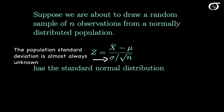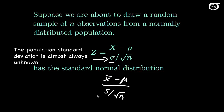So we do the next best thing: instead of using the population standard deviation, we're going to use our sample standard deviation to estimate it. Then we're going to have a statistic x̄ minus μ over s over the square root of n, where s is our sample standard deviation.